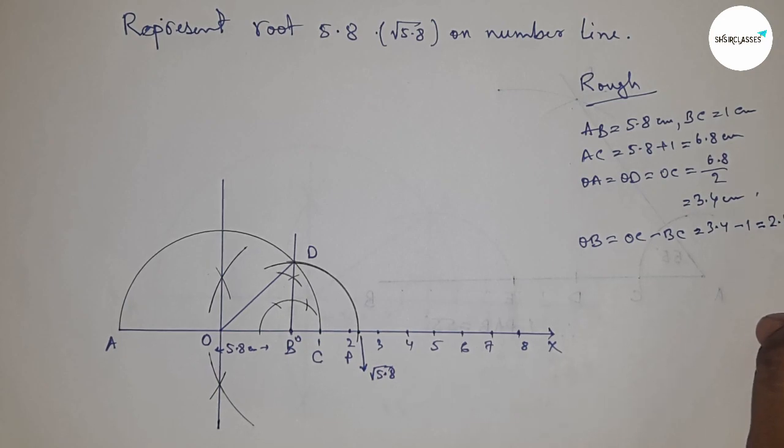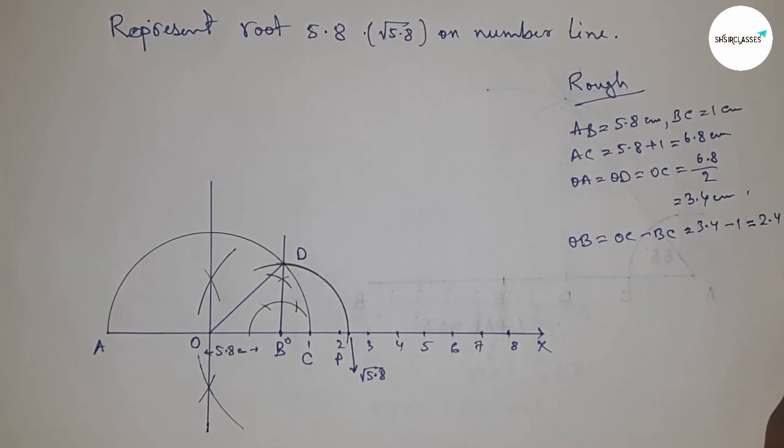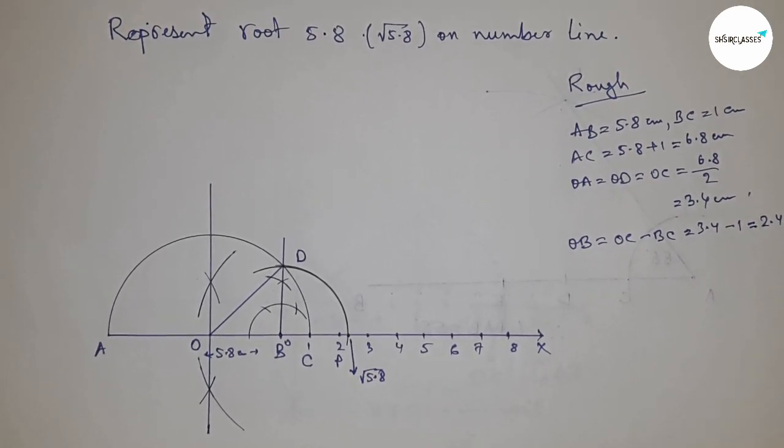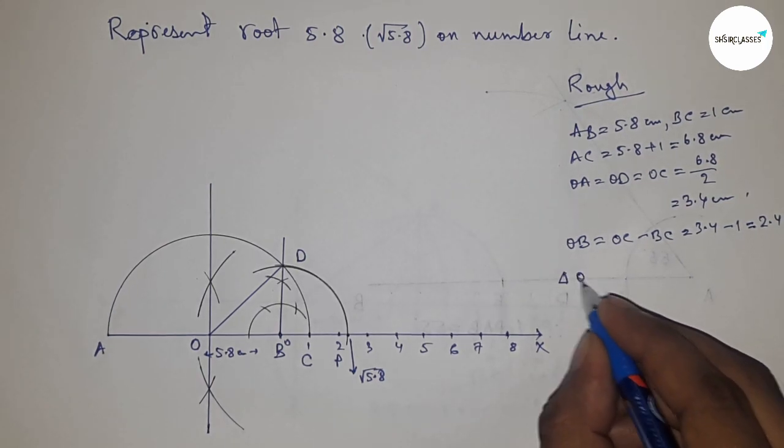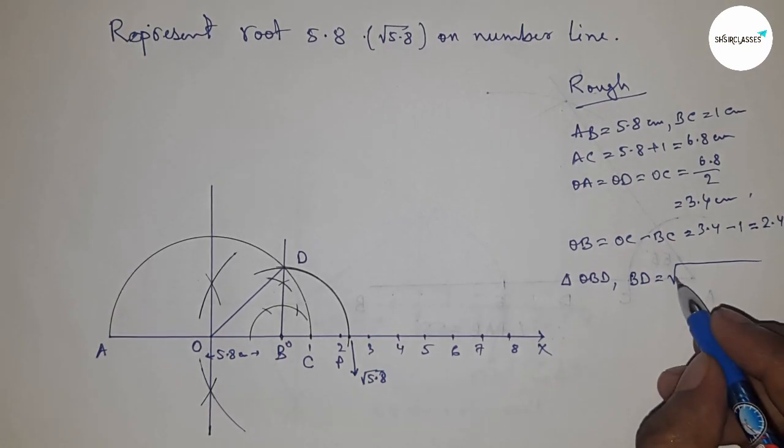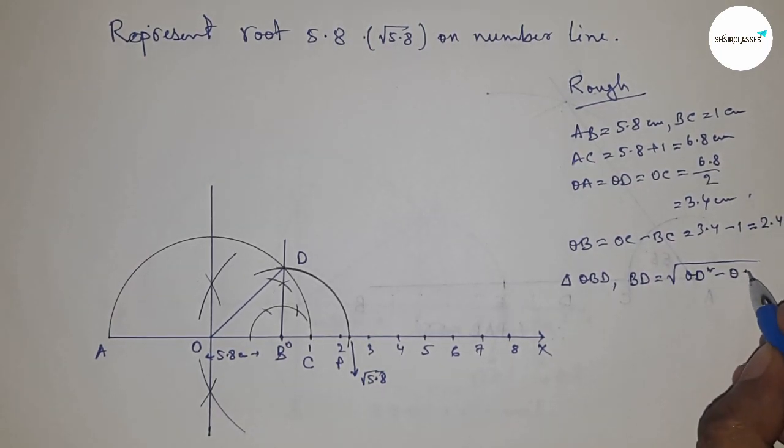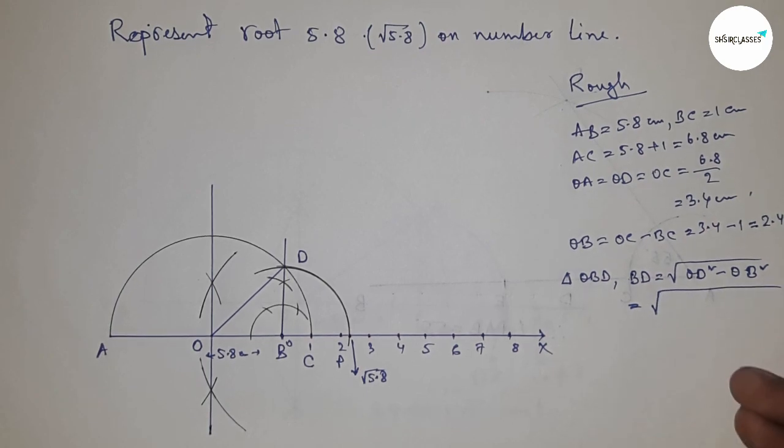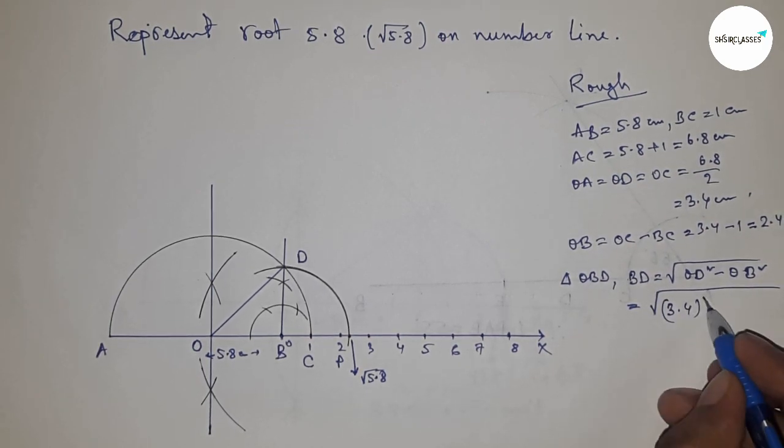Now in right angle triangle OBD, we can write that BD equals, by Pythagorean theorem, the square root of OD squared minus OB squared. Putting the values of OD and OB.